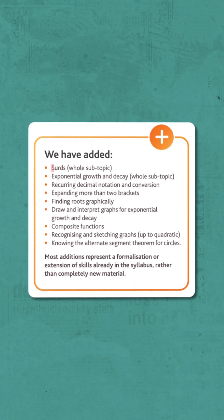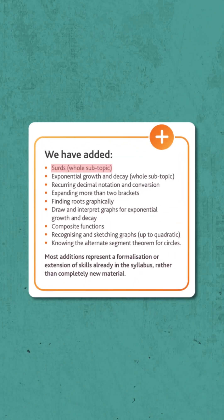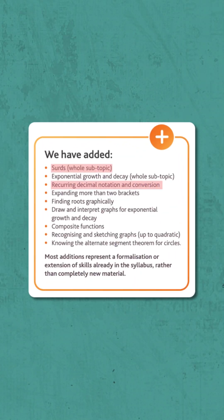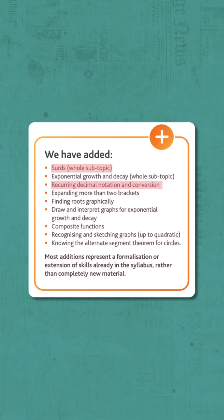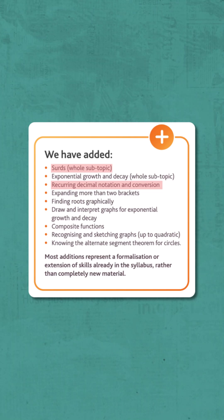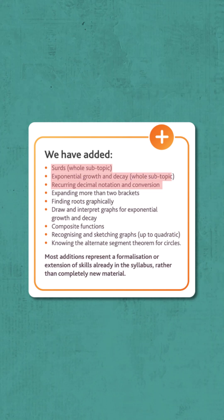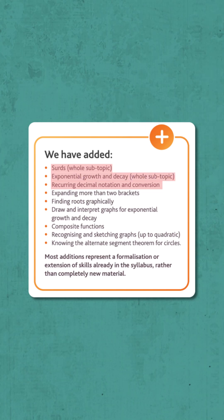At number one we have CERDs, at number two we have recurring decimal and fraction, and at number three we have exponential growth and decay.